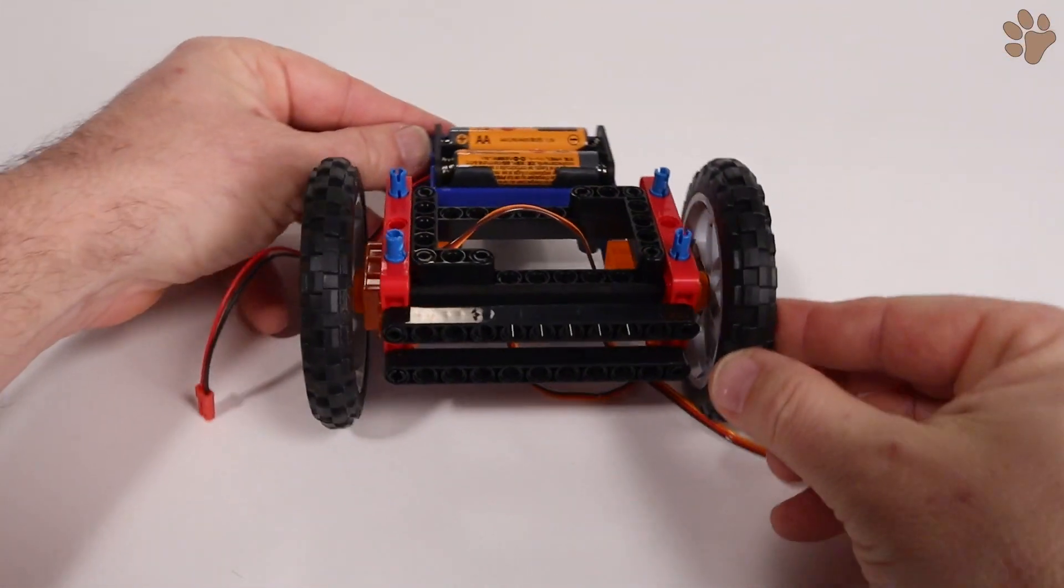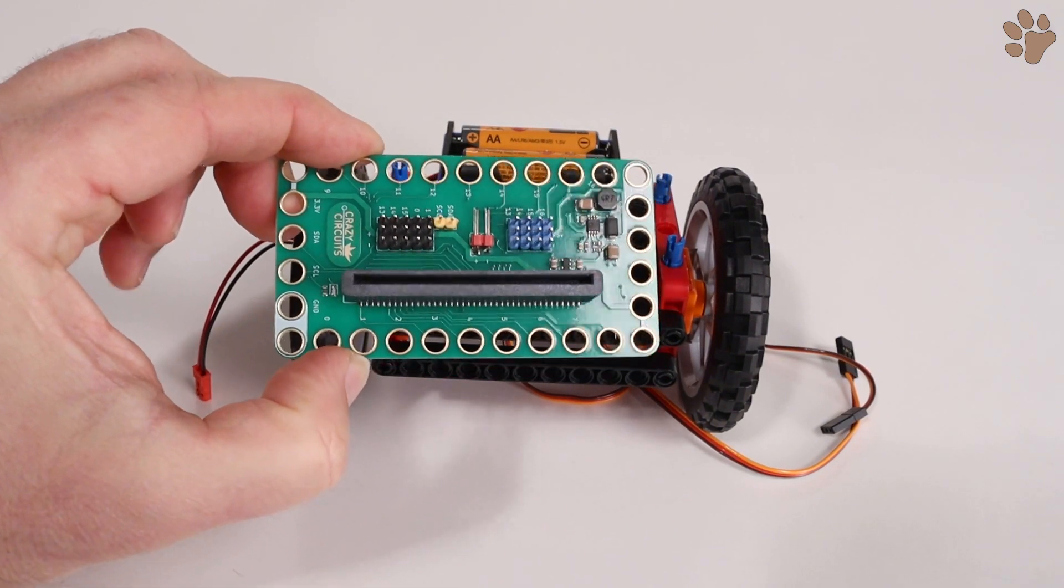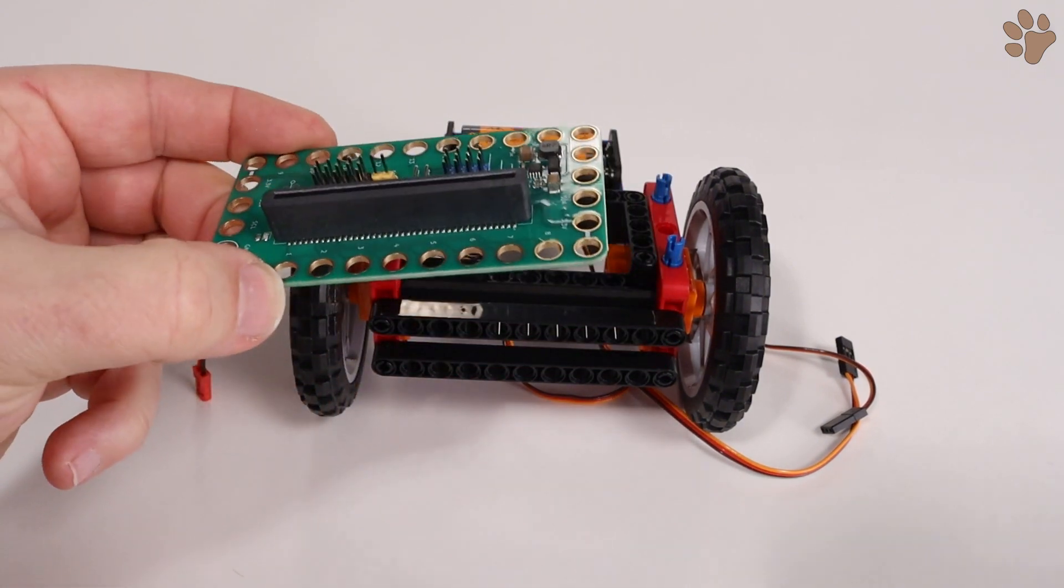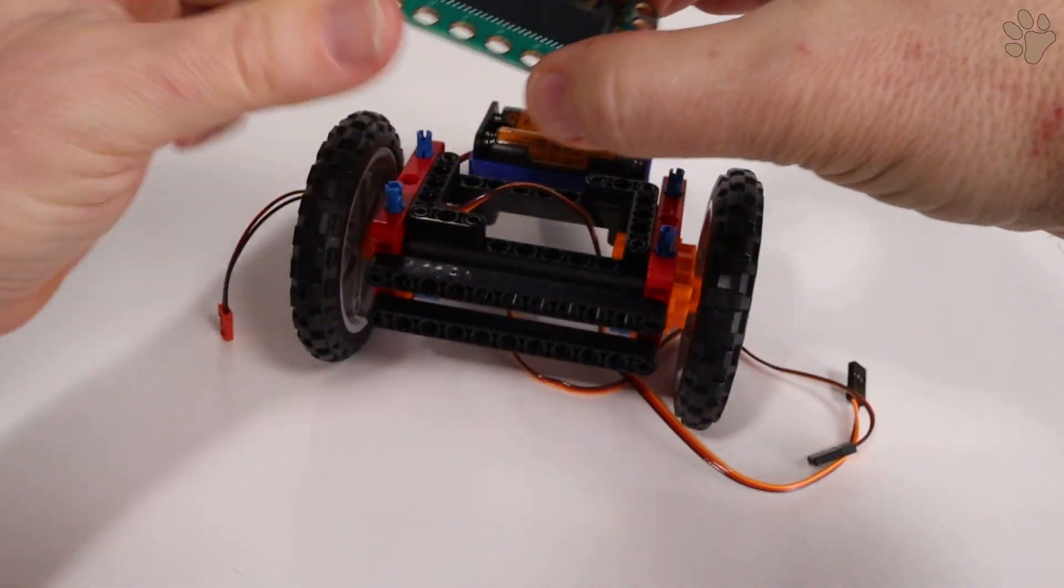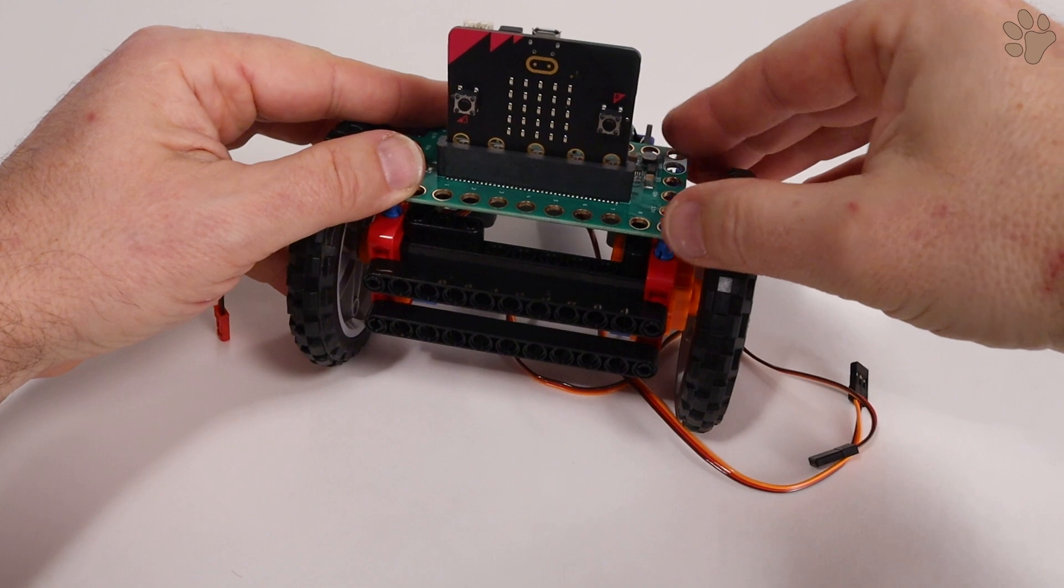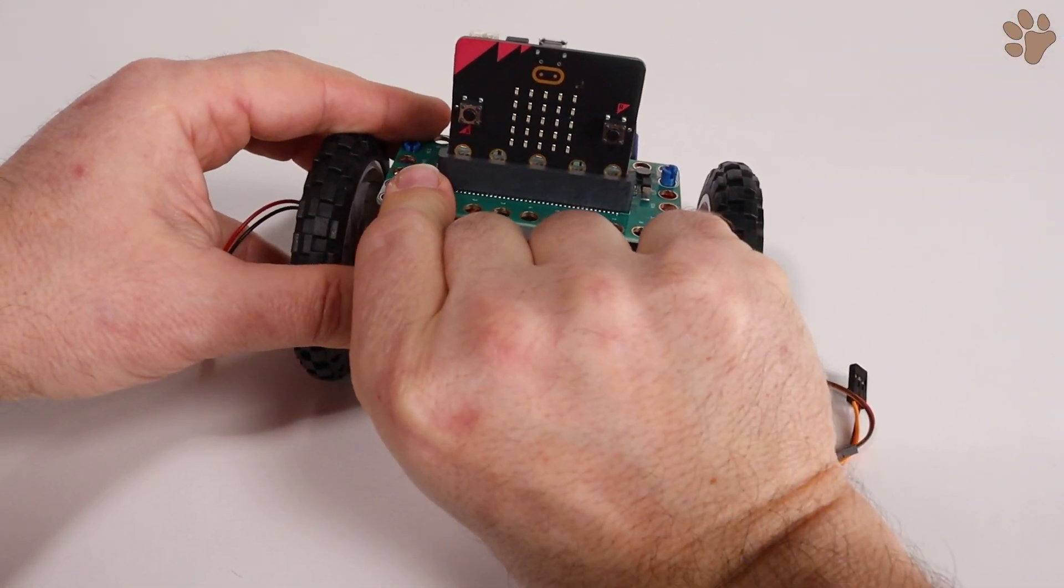Now let's install the bit board. First, we'll want to take the micro bit and place it into the bit board. Make sure that the micro bit is facing forward, the LED display facing towards us, and snap the bit board into place down onto the four pins.